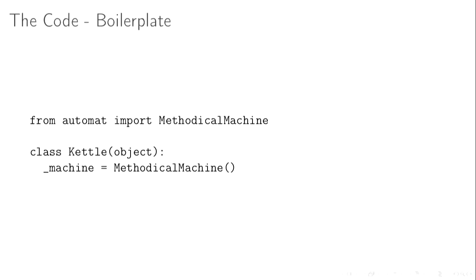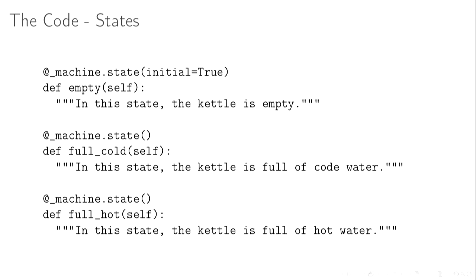Now I'm going to go through the example of how you would do it with Automat. The class you need is MethodicalMachine. We have a kettle and it's got an underscore machine equals MethodicalMachine — the underscore is definitely important. Any variables that start with an underscore means they're private; we don't expect public users of our class to interact with that. It gets back to that whole idea of encapsulation where we're solving a problem with the state machine and that's an internal private detail customers don't need to know.